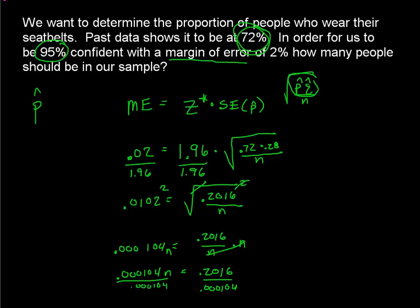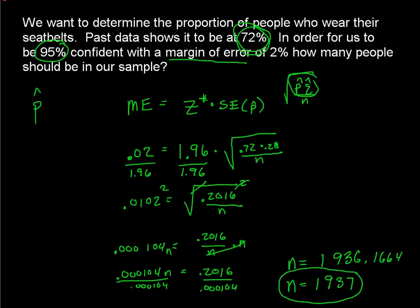The result is a sample size of 1,936.17, so we round up to 1,937. If I sample 1,937 people, I can be 95% confident with a margin of error of only ±2% from my sample proportion — a very tight interval. The drawback is I would have to ask a lot of people.